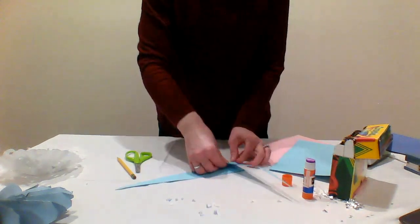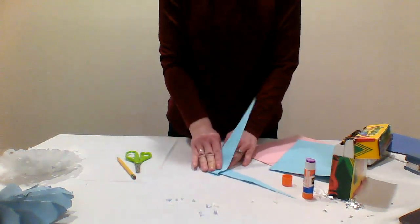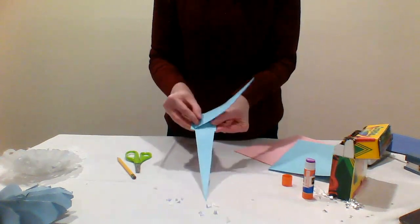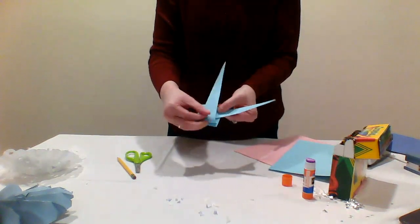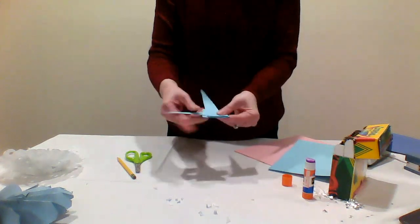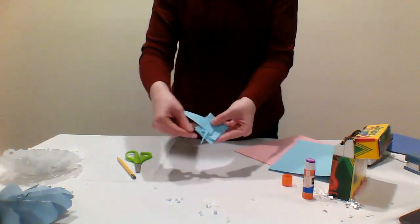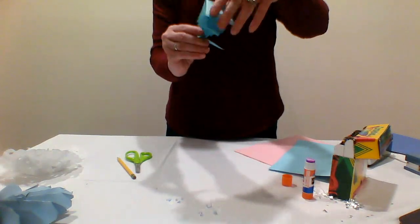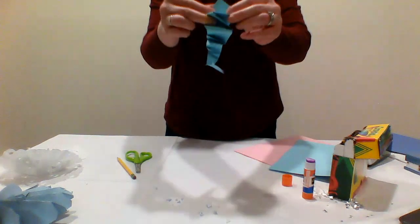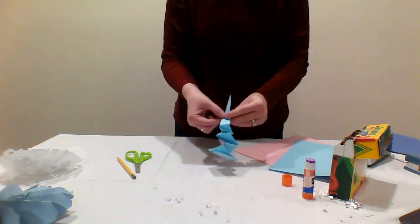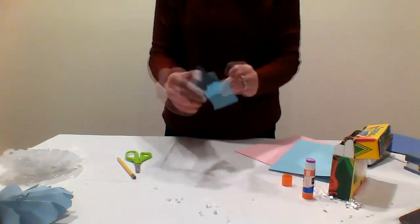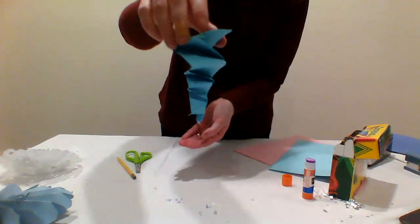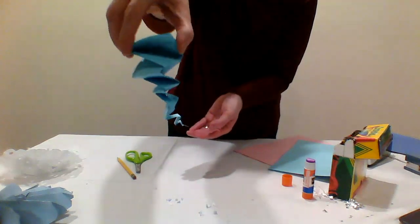Fold long ends of the triangle together as many times as you can until your two pieces of cardstock have created a small paper tower. When you don't have any more paper to fold, gently fold the narrowest end of the paper, and you will have an icicle shape.